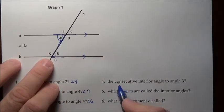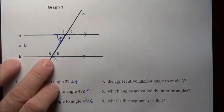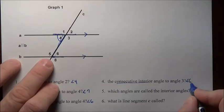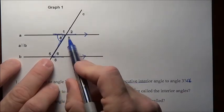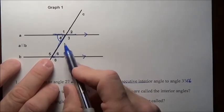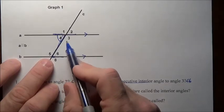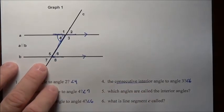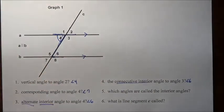But here, state of Virginia, we call them consecutive interior angles. So the consecutive interior angle to angle three is angle six. Now these will not be equal, but they will always be supplementary. They will always add up to 180 degrees. Same as four and five are consecutive interior angles.